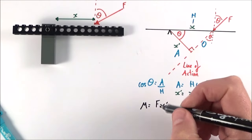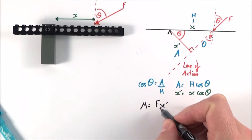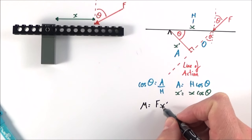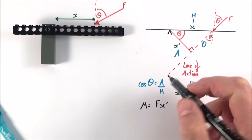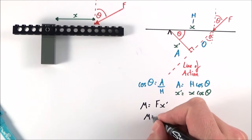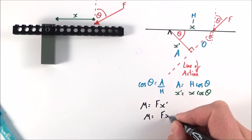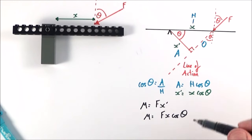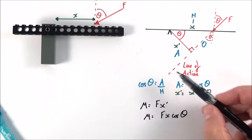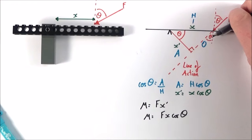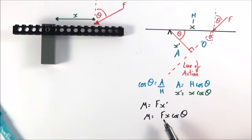So the moment equals the force times X', the perpendicular distance from the pivot to the line of action. That means the moment in this case is equal to F times X times cos theta. This is one way of thinking about it — when a force acts at an angle, the moment equals FX cos theta.